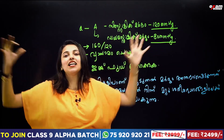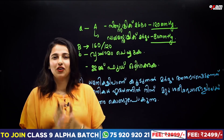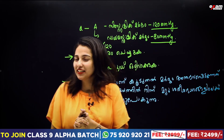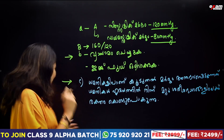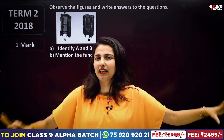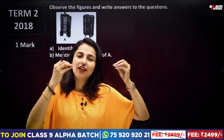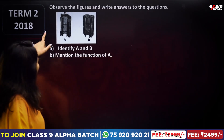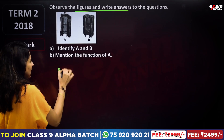The blood has a high speed pressure in this vessel. So let's talk about a clear concept about blood pressure, hypertension and coronary hypertension. This is a very important topic. Now, observe the figure and write answers for the questions. Identify A and B. Here we have two labels, A and B.